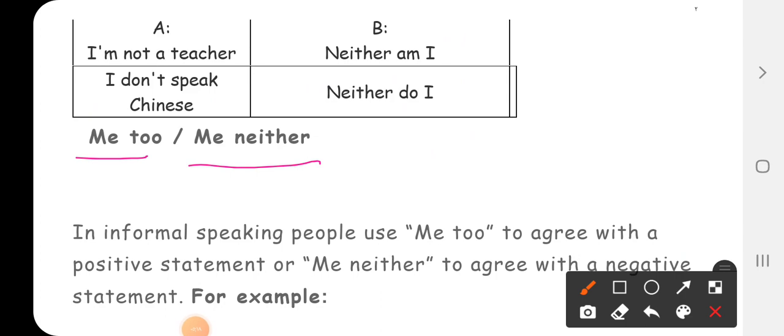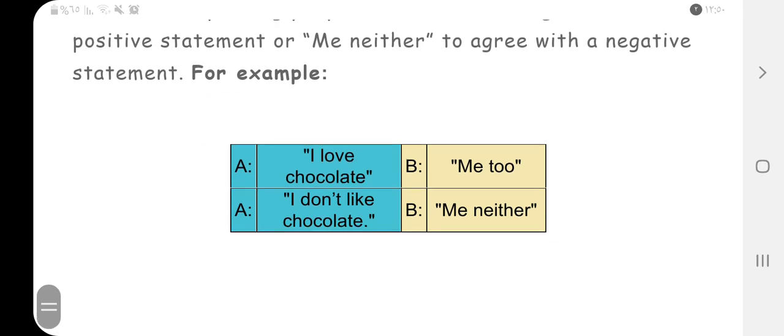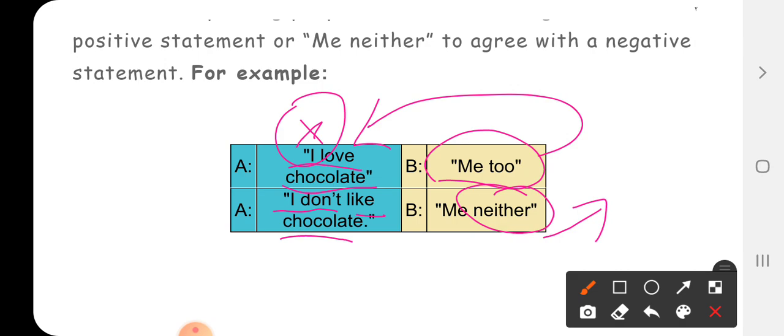Now we have also me too, me neither. Okay, in informal speaking we use me too to agree with positive statement and me neither to agree with negative statement. For example, I love chocolate, me too. Okay, we use me too if you give your agreement.